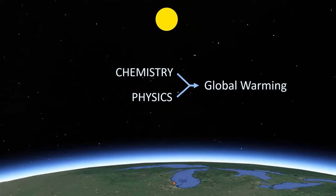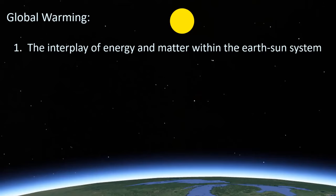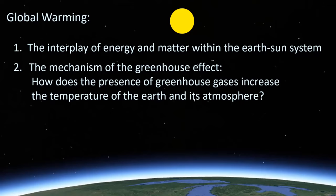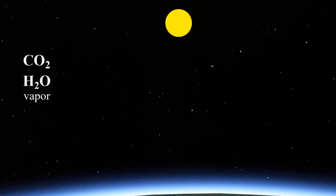There is a large body of work that explains the mechanism of global warming, primarily concerning: one, the interplay of energy and matter within the Earth-Sun system, and two, the mechanism of the greenhouse effect — how does the presence of greenhouse gases increase the temperature of the Earth and its atmosphere? These two points cover many interrelated concepts. The video will focus on carbon dioxide and water vapor, which account for the majority of current warming, and the warming mechanism is the same for all greenhouse gases.